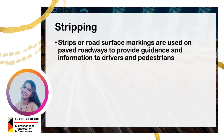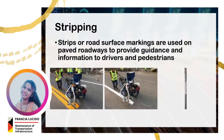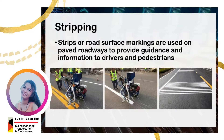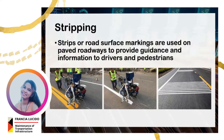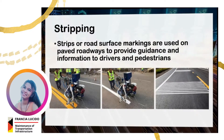It was mentioned earlier that traffic services include stripping. Strips or road surface markings are used on pavements to provide guidance and information to drivers and pedestrians. Stripping is a continuous function since it is significant in assuring a safe, smooth, and efficient traffic flow. These pavement markings are an effective way of communicating information to drivers on the road, playing essential roles in road safety and directing vehicles for both short and long-range driving activities.